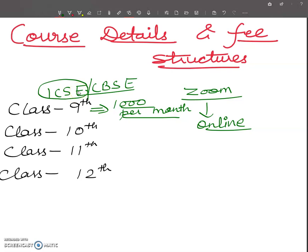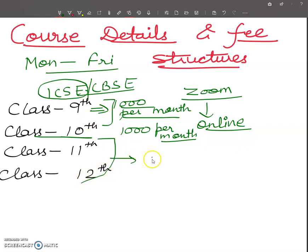In Class 9th and 10th, the fee structure is same, that is 1,000 per month. There will be online classes five days a week, Monday to Friday, 40 minutes online classes on Zoom. Saturday and Sunday is off. Same fee structure for 11th and 12th is 1,500 per month for biology, for ICSC and CBSE board.